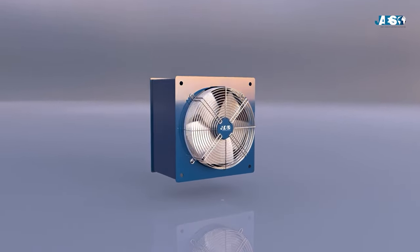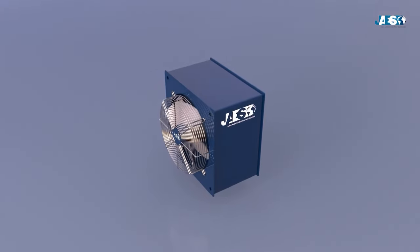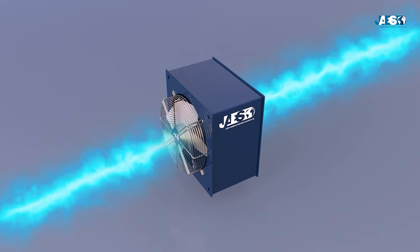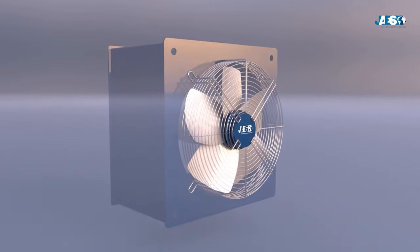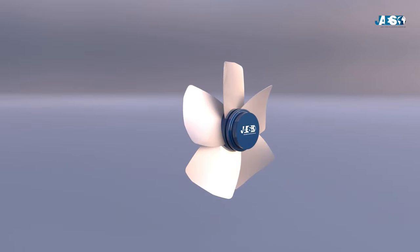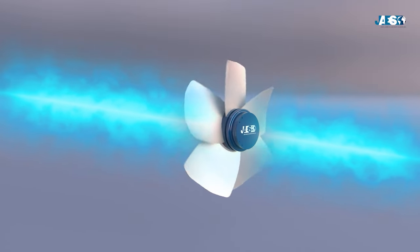In axial fans, gas is aspirated and sent towards the same direction, parallel to the axis of the impeller. The impeller, the rotating part of all fans, is made of inclined blades attached to a central hub. When the whole group starts spinning, the blades push the air, thus creating a difference in pressure.